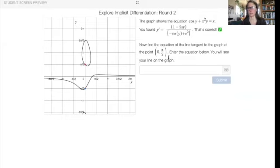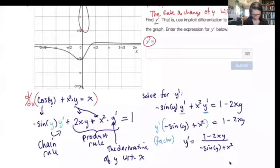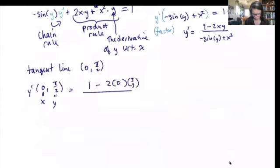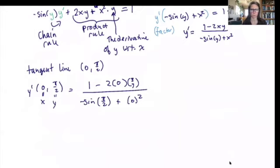Now it opens a new question: find the equation of the line tangent to the graph at the point (0, π/2). Zero, π/2 is on this graph, so we need to use the derivative to find the slope. For the tangent line, y prime at the point means plugging zero for x and π/2 for y into (1 minus 2xy) over (negative sine(y) plus x squared). We have two inputs — an x and a y — so plug in zero for x and π/2 for y. The numerator simplifies to one.